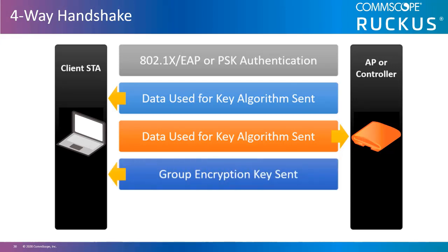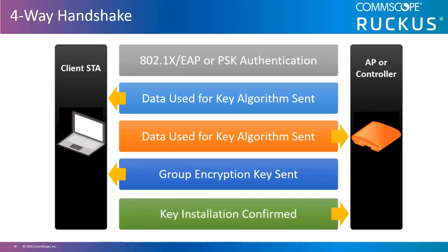Secondly, the four-way handshake transmits the group encryption key called the group temporal key from the access point to the client station. Within the third message of the four-way handshake, the groupwise transient key is encrypted using the already generated unicast key and transmitted to the client device. The fourth message the client simply uses to confirm to the access point that the groupwise key pair is installed and ready for use.